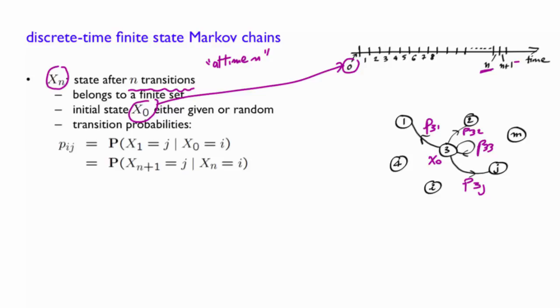Note that these are the only possibilities. As a result, you have p31 plus p32 plus p33 plus p3j will equal 1.